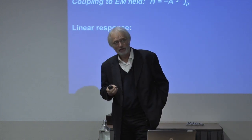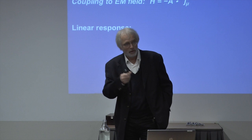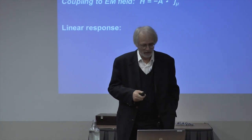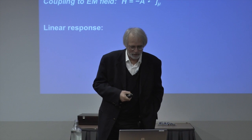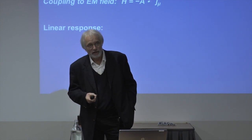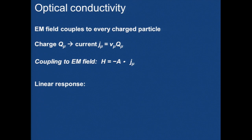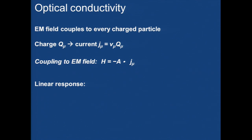Q_μ can be plus or minus an elementary charge, but sometimes also twice or three times that. The current of such a particle is the charge Q, where μ refers to the kind of particle — it will be E for an electron, for example. The current associated with that is the velocity of the particle multiplied by the charge. For the current density, you multiply by the density of those particles. The coupling to the electromagnetic field is described by a term in the Hamiltonian which is minus the vector potential times this current. There's also an A-squared term we won't say much about.